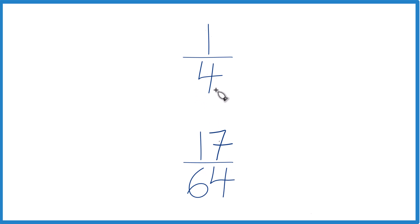The other way is we could find a common denominator. Right now the denominators here, we have 4 and 64, but if we had a common denominator, we could just compare the numerators.